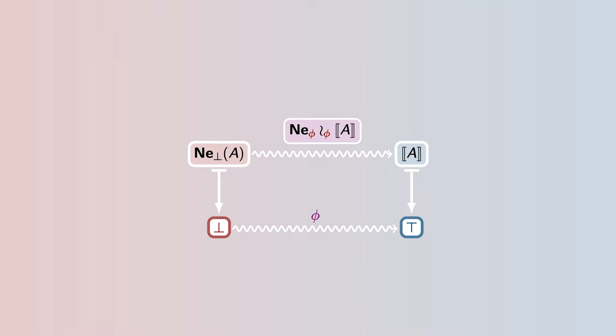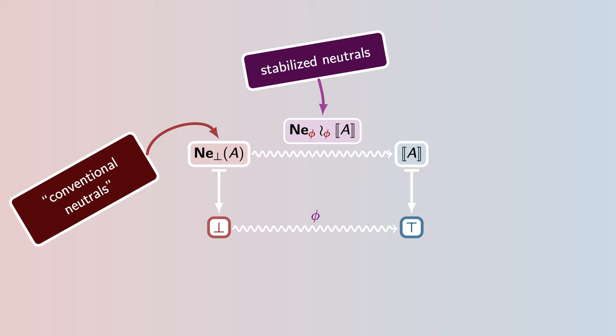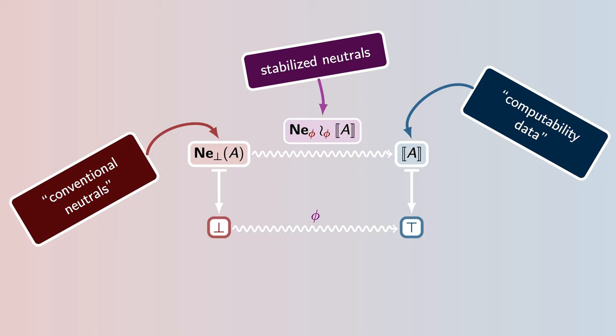To develop a geometric intuition for the concept of stabilized neutrals, it is helpful to investigate how the collection of stabilized neutrals varies in frontiers of instability. When the frontier of instability is nowhere, the stabilized neutrals restrict to the conventional neutrals. On the other hand, when the frontier of instability is everywhere, the stabilized neutrals restrict to pure computability data. In this sense, stabilization can be seen to interpolate between neutrals and computability data.